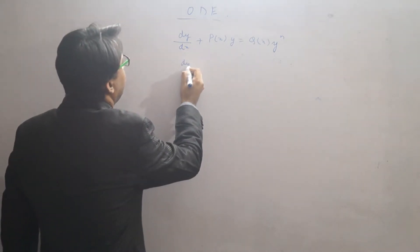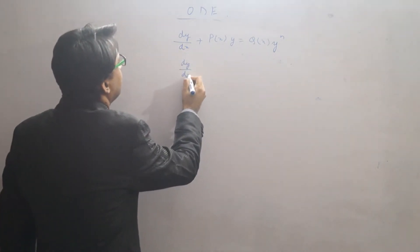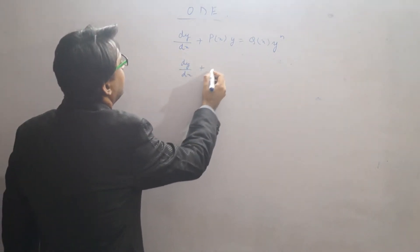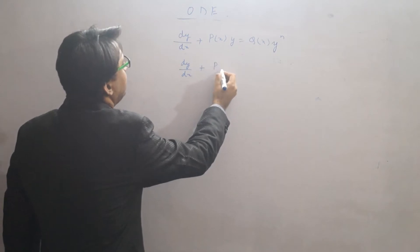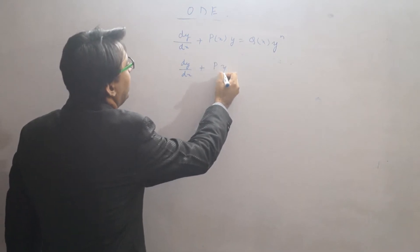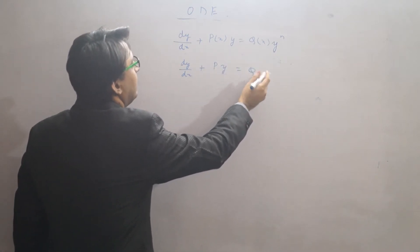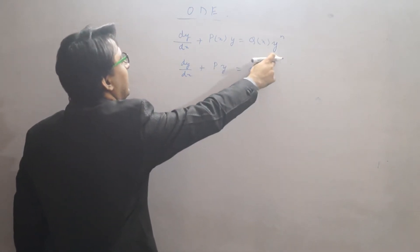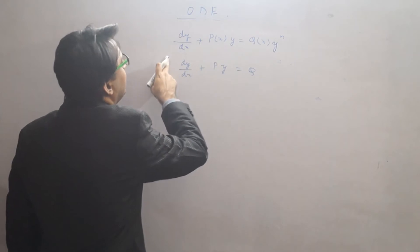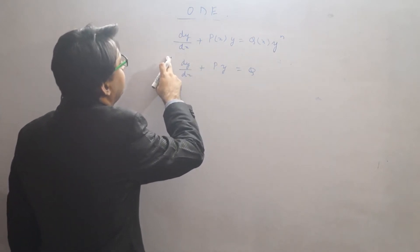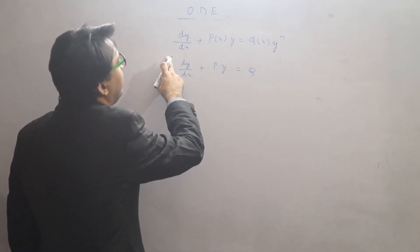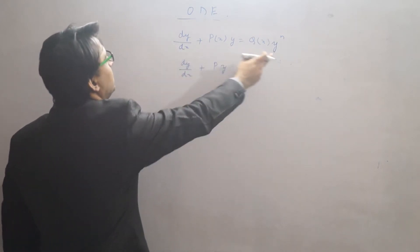So, dy/dx plus P·y equals Q. What I do is multiply — divide by y to the power n.